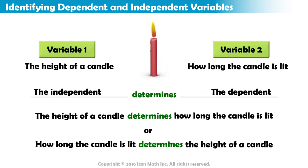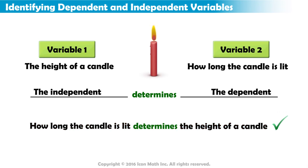As the candle burns, it gets smaller. So, how long a candle is lit determines the height of the candle. The height of the candle depends on how long it was lit. The height of the candle is the dependent variable and the amount of time it was lit is the independent.